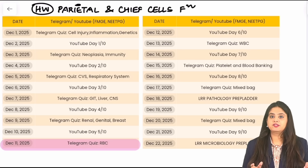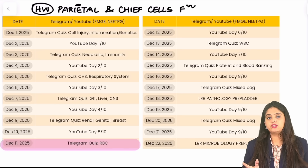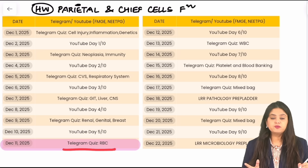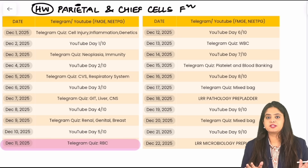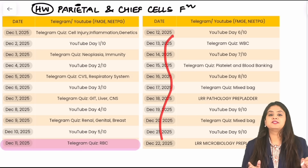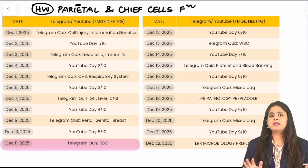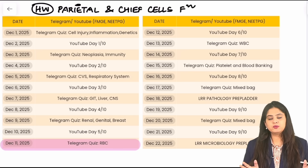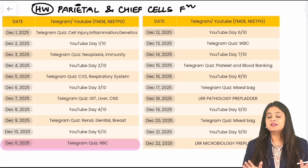That completes the 10 questions for the day. Your homework: what do the parietal cells and chief cells of the stomach release? Tomorrow there will be a quiz on Telegram, and we are starting hematology questions on Telegram thereafter. I hope you're enjoying the series — I'm personally checking every answer, correcting errors where needed, and dropping a heart when answers are correct. I'll see you in the next session.